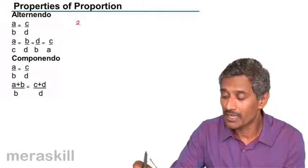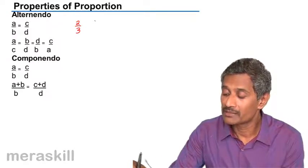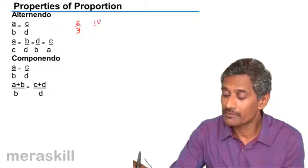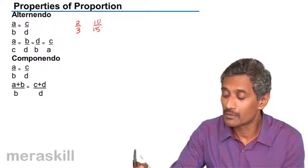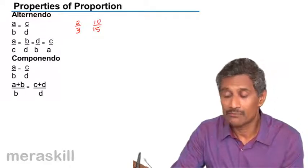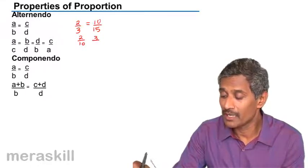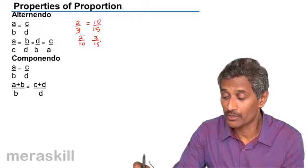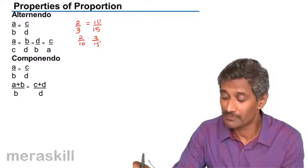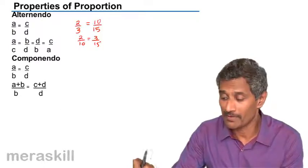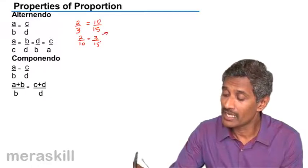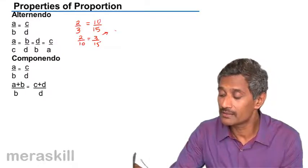Let us take a simple example. We have 2/3 and say 10/15. So, 2/3 and 10/15 are definitely equal to 2/10 and 3/15. They are also equal because 2/10 is 1/5, 3/15 is also 1/5. Much the same way, we even have, you alternate this and this,